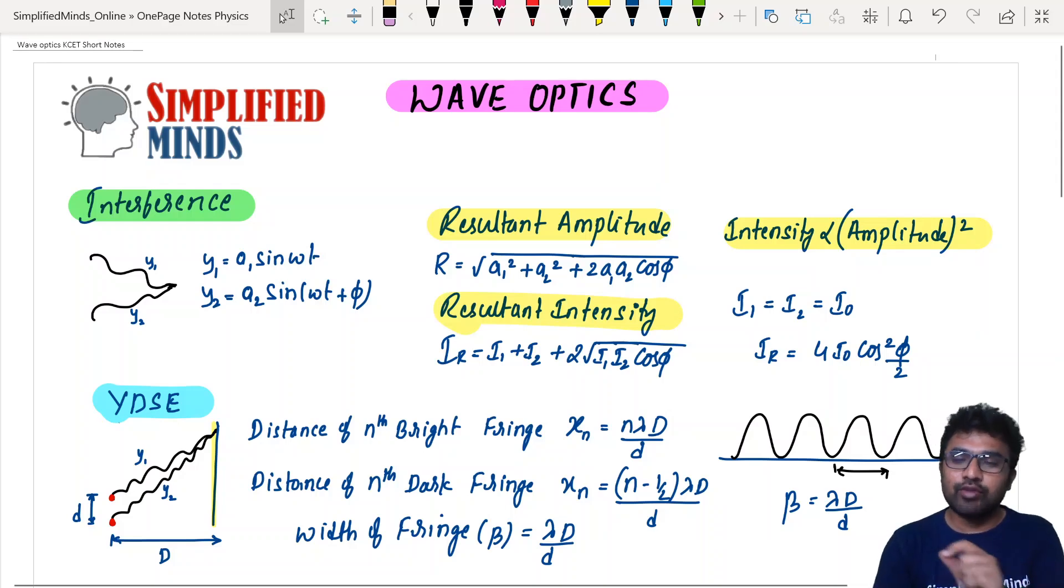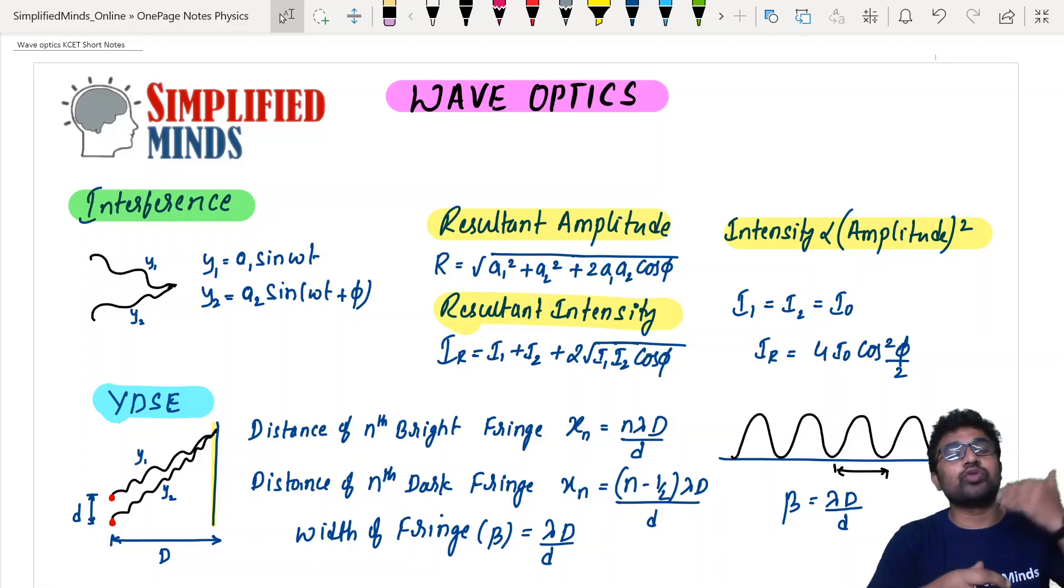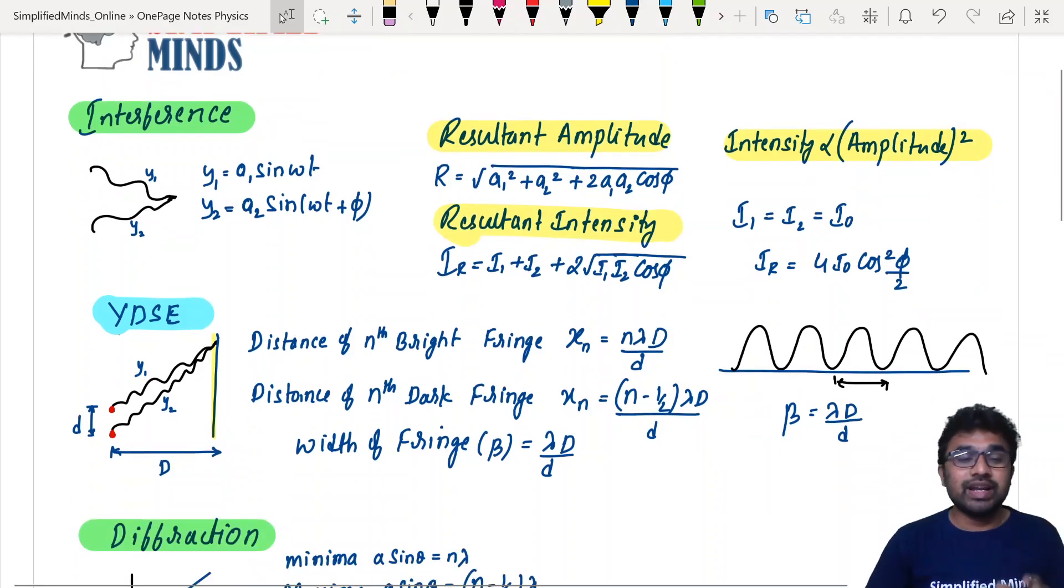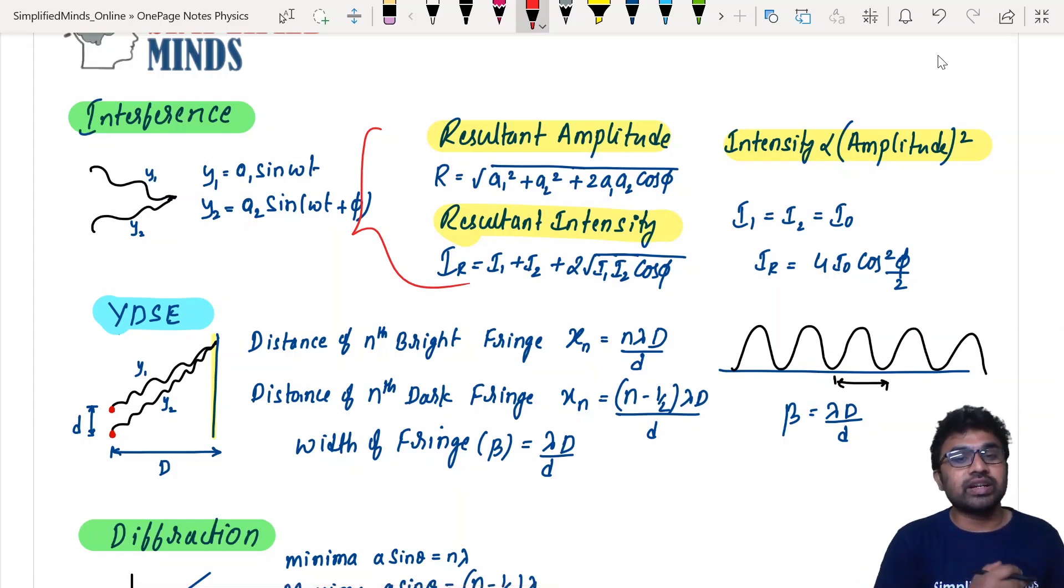Coming to the first topic, I'm not giving the theory actually. The theory you should know - the Huygens principle, the wavefronts, the wavelets. These are the basics from a theory point of view for Wave Optics. Directly, formula point of view. So basically, for interference, these formulas are in the textbook: resultant amplitude, resultant intensity. This is very important.